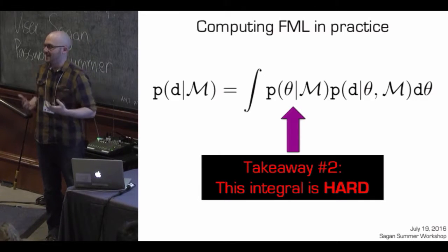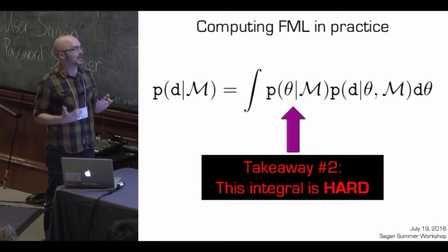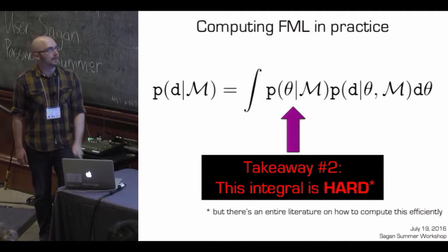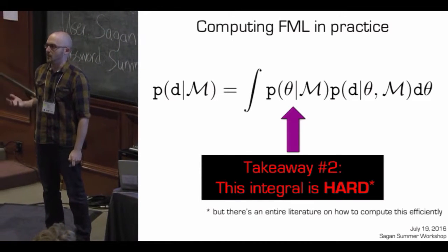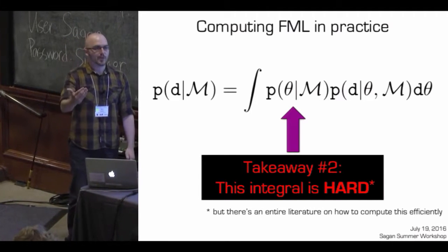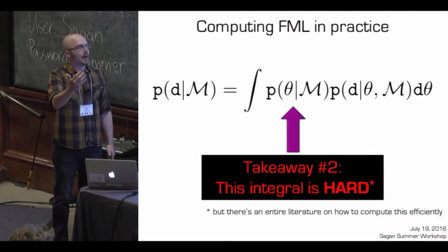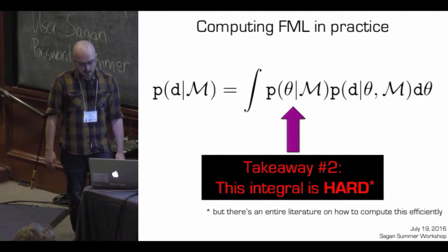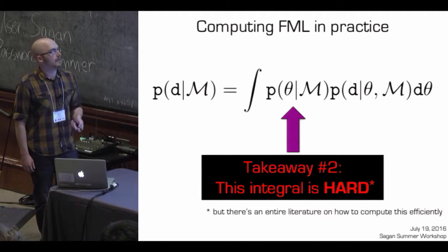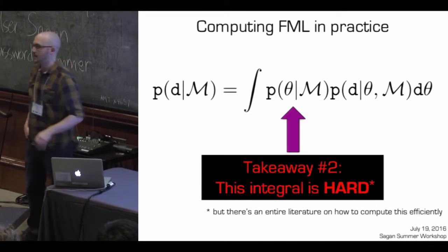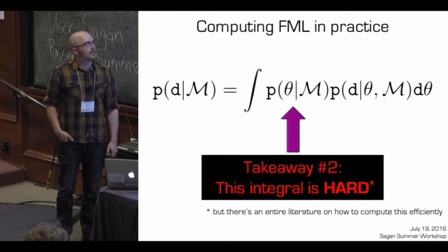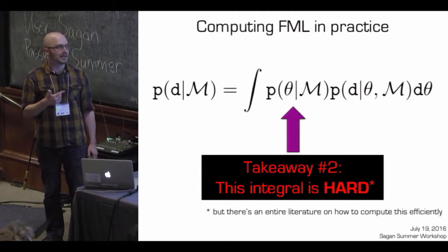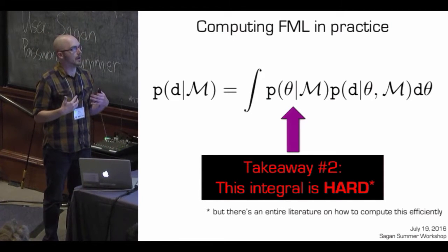Fortunately, scientists like hard problems. Some scientists have focused on how to compute this integral robustly, and there's an entire literature on computing it efficiently. A lot of this has been motivated by controversial planet discoveries — people have often wondered whether adding an additional planet is warranted against the additional parameters invoked in that model. I'm going to discuss several methods that have been used to compute this integral, mostly in the context of how many planets are in a data set. The list isn't necessarily comprehensive — I'm limiting to things I know something about.